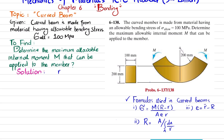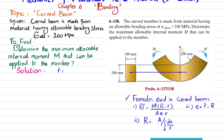First, we find r-dash, the distance from the center of curvature to the centroid. Since the cross-section is rectangular, its centroid lies at the mid-height. The radius of curvature is given as 200 mm, and half the section height is 100 mm, so r-dash = 200 + 100 = 300 mm = 0.3 m.